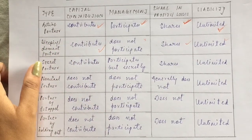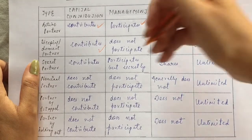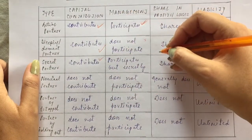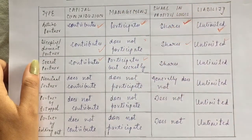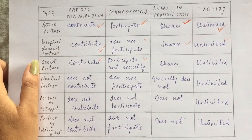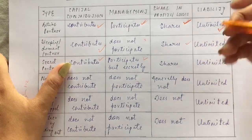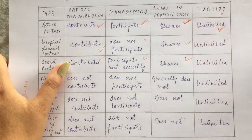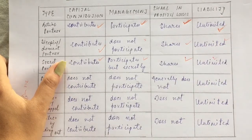Then comes the secret partner. The name means confidential. A secret partner contributes to capital and participates in management, but in a secret role. They share in profits and losses. Their liability is the same — unlimited.